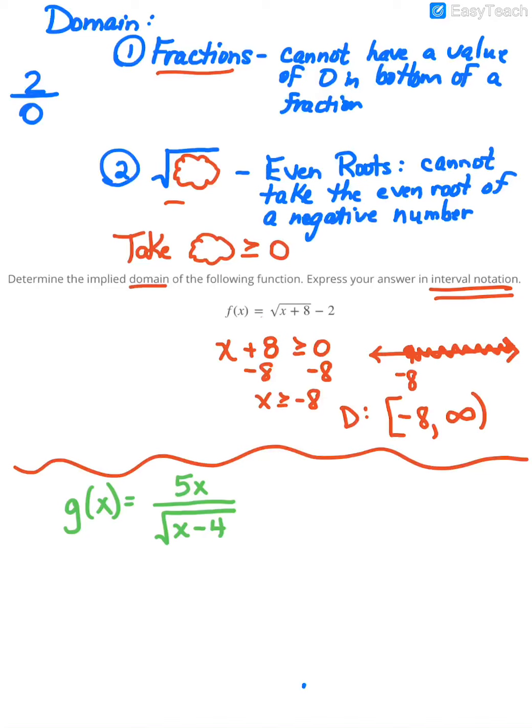If we take both of those into account, then you're still going to take whatever is under the radical, but instead of saying greater than or equal to 0, you're strictly going to say greater than 0 because you have to consider the fact that you cannot have a 0 in the bottom of a fraction. When you're thinking about radicals, if that radical happens to be on bottom, the difference is whatever is under that radical, you're only going to say greater than 0.